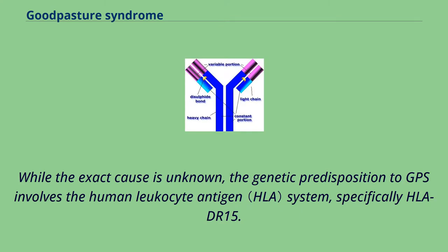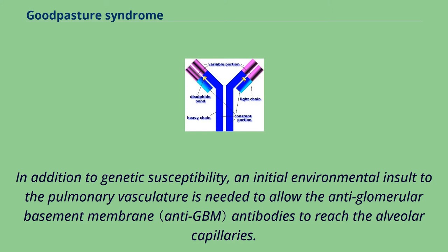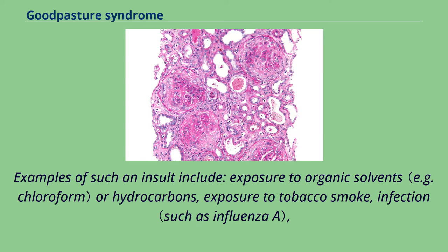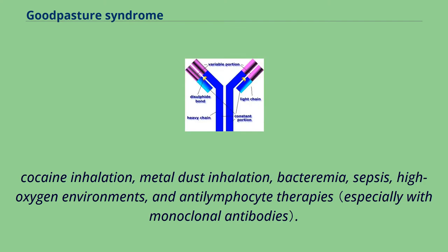While the exact cause is unknown, the genetic predisposition to GPS involves the human leukocyte antigen system, specifically HLA-DR15. In addition to genetic susceptibility, an initial environmental insult to the pulmonary vasculature is needed to allow the anti-glomerular basement membrane antibodies to reach the alveolar capillaries. Examples of such an insult include exposure to organic solvents or hydrocarbons, tobacco smoke, infection, cocaine inhalation, metal dust inhalation, bacteremia, sepsis, high-oxygen environments, and anti-lymphocyte therapies.